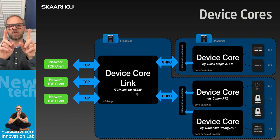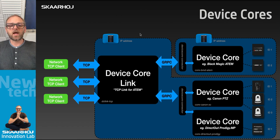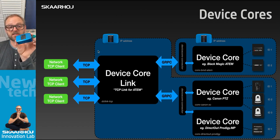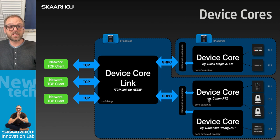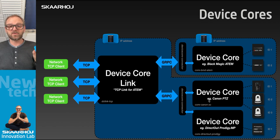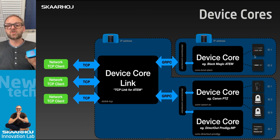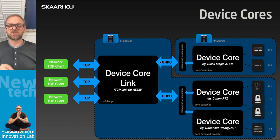For load balancing or other reasons you might want a second BluePill on your network, connected to your devices. You can connect over the network to that second BluePill. Let's take a look at the configuration — you go to the Packages tab inside the BluePill.